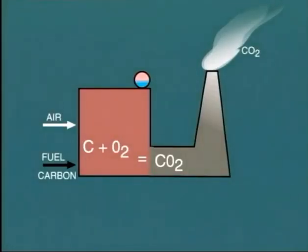Another constituent of the flue gas discharging to atmosphere is CO2, carbon dioxide. CO2 is inert and is not harmful in the atmosphere, but it is thought that the presence of carbon dioxide may contribute to the global warming trend — the so-called greenhouse effect. At present, there are no emission limits placed on CO2, but conceivably this may come at some future date.